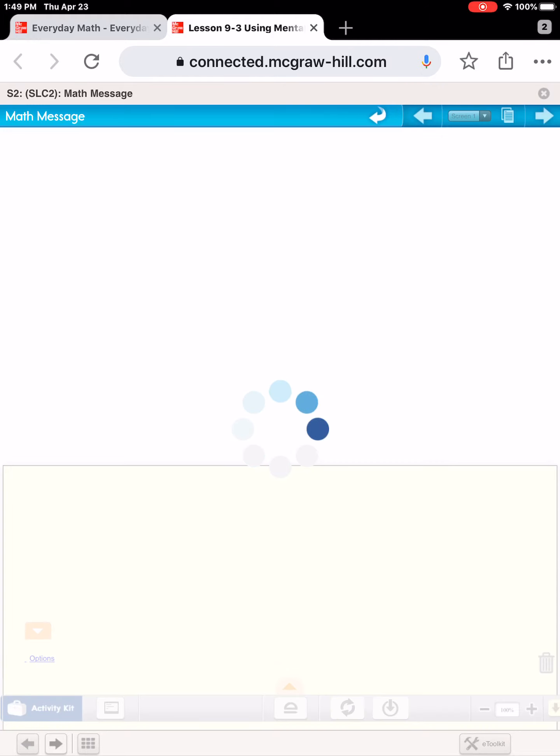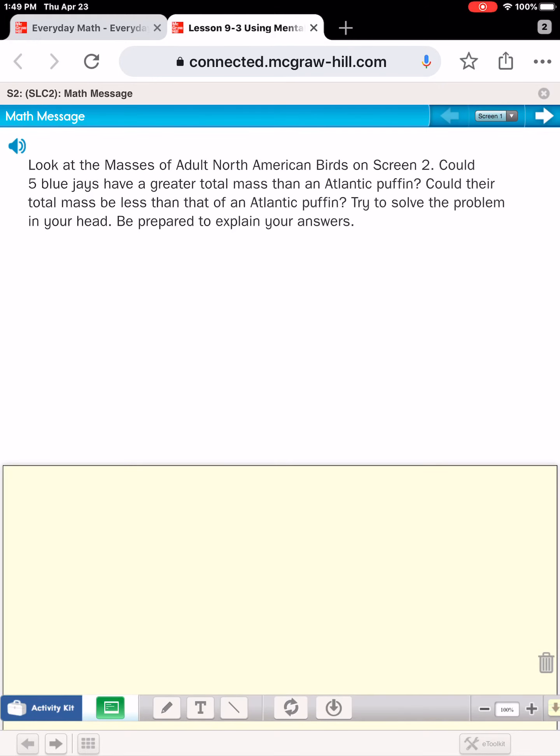All right. For the math message, I'd like you to open your math journal back to the two pages that have the masses of Northern American birds. It's pages 277 and 278. If you need to hit pause, go ahead. And using those pages, I'd like you to think about the answer to these two questions. It says, could 5 Blue Jays have a greater total mass than 1 Atlantic Puffin? Could 5 Blue Jays have a total mass less than 1 Atlantic Puffin? I'm going to try to solve this mentally.